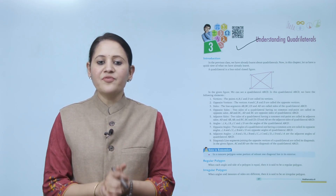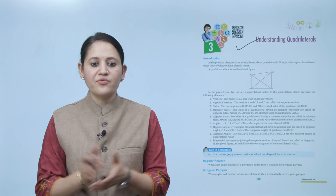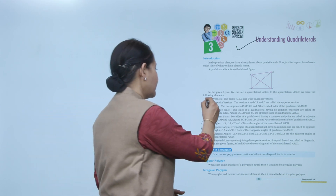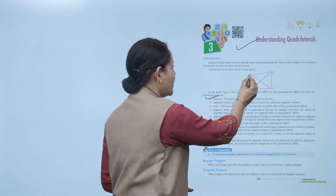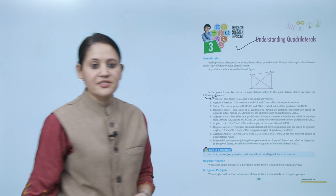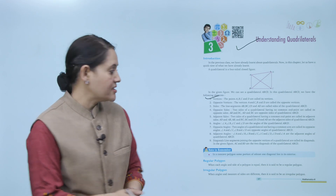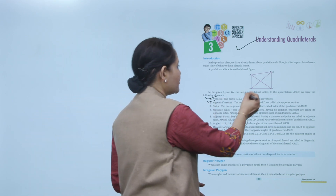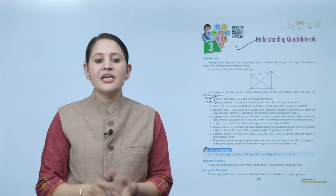In the given figure we can see a quadrilateral ABCD. In this quadrilateral ABCD we have the following elements. First, vertices — vertices means corners. The points A, B, C, D are called vertices. Next, opposite vertices: the vertices A and C, and B and D are called opposite vertices.